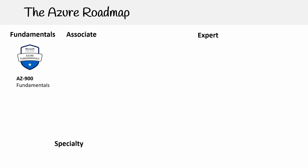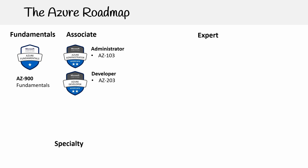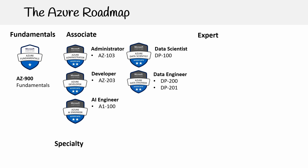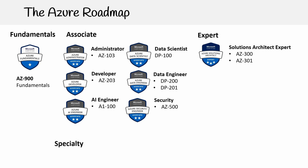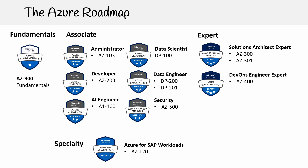In the Fundamentals, we have the AZ-900. For the Associate, we have the Administrator, the Developer, the AI Engineer, the Data Scientist, the Data Engineer — and for Data Engineer you'll see there are two course codes: DP-200 and DP-201, because some certifications require you to pass two different exams. At the Expert level, we have the Solutions Architect Expert, which also requires two exams, and the DevOps Engineer Expert. For Specialties, we have Azure for SAP Workloads and IoT Developer. These are all the Azure role-based certifications.